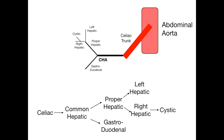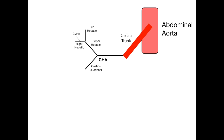The proper hepatic splits into the left hepatic and the right hepatic, and off the right hepatic, in most people, you get the cystic artery. That's what you need to know for the celiac trunk's first major branch, the common hepatic artery — the first of three major branches off the celiac trunk.